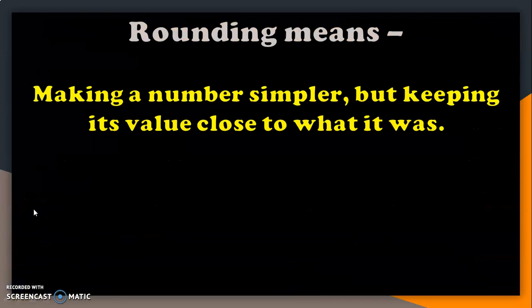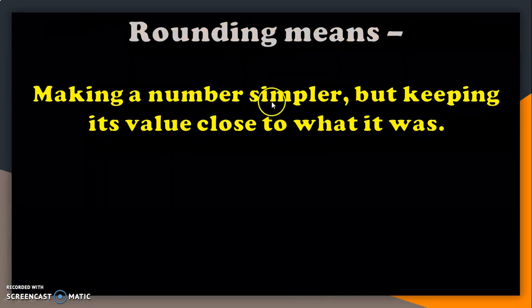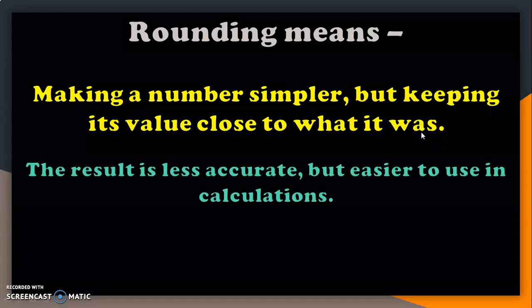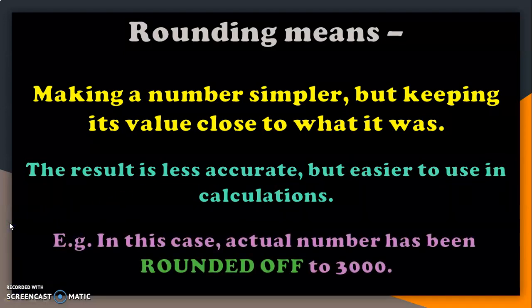What does rounding mean? Making a number simpler, but keeping its value close to what it was. The result is less accurate, but easier to use in calculations. For example, in this case, the actual number has been rounded off to 3000.